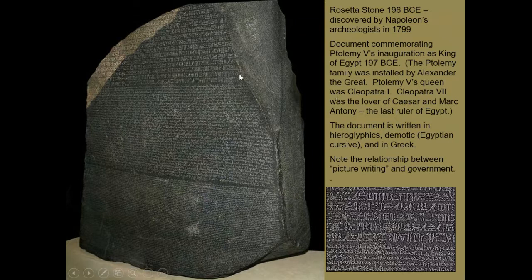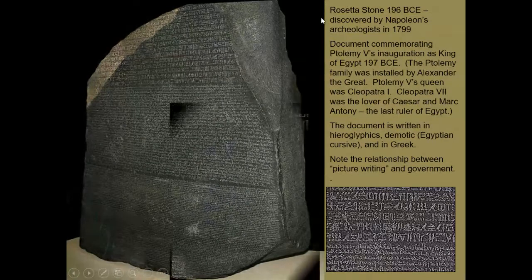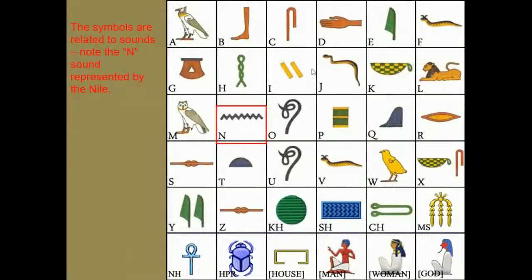Ptolemy was installed as the new dynastic ruler of Egypt. This document includes hieroglyphic script at the top, then in the middle section the same text in the script known as Demotic, and at the lower section the same text a third time in Greek. This allows us to backwards-translate from the Greek through the Demotic to understand what the hieroglyphics themselves actually stood for — a seminal moment in translating the Egyptian hieroglyphic language.